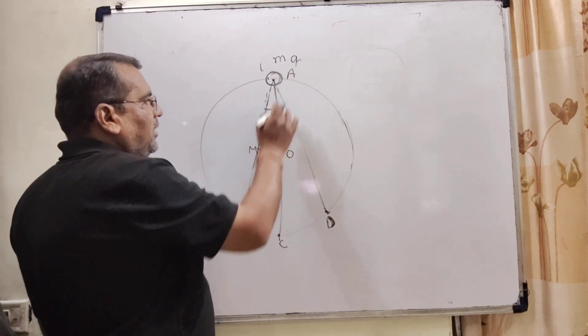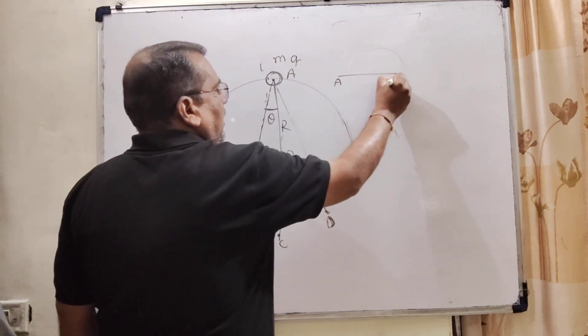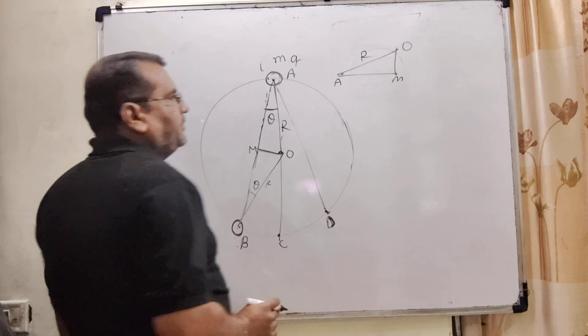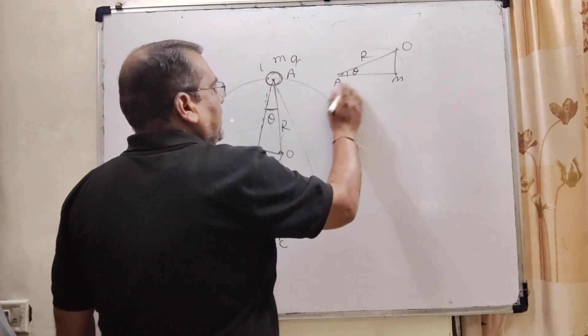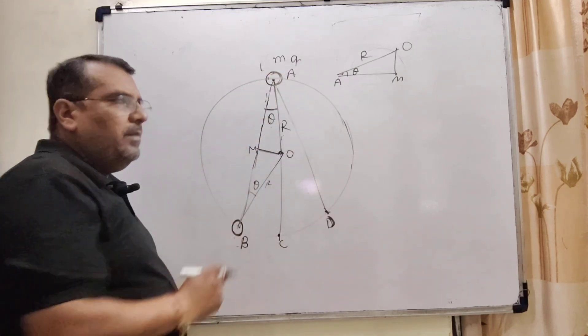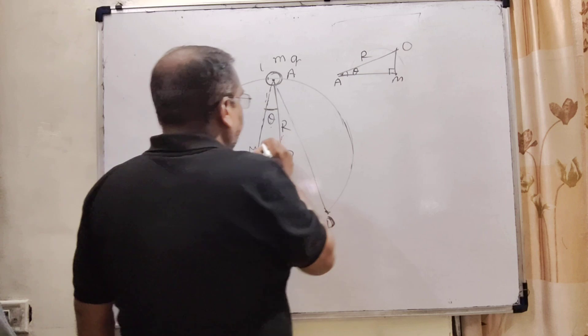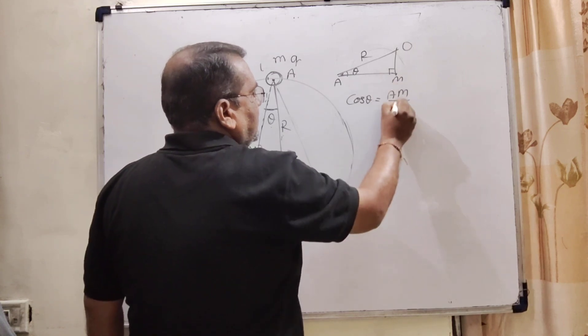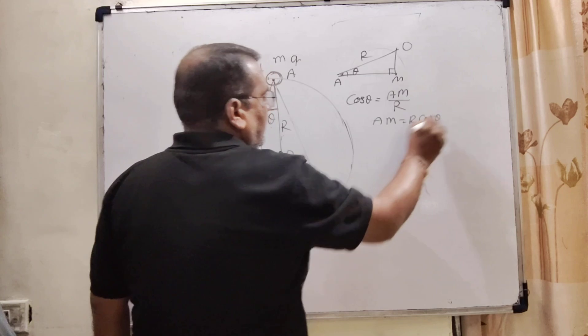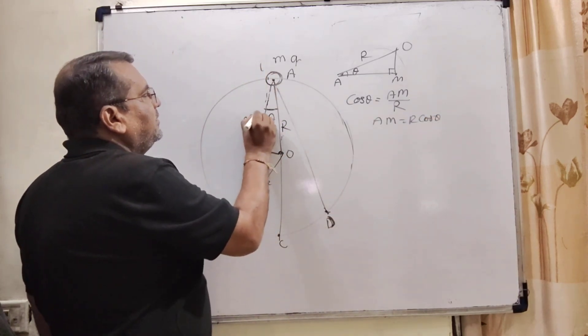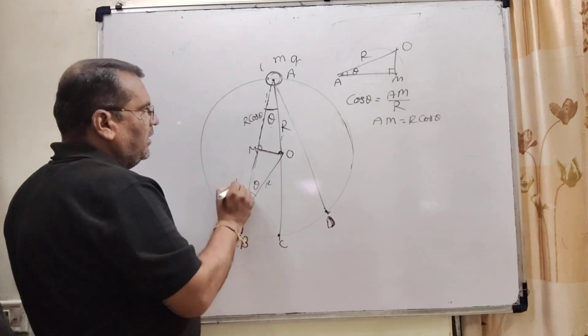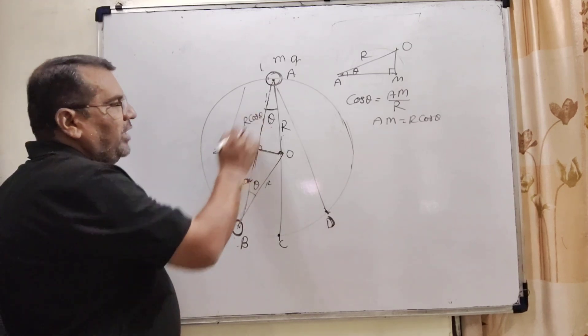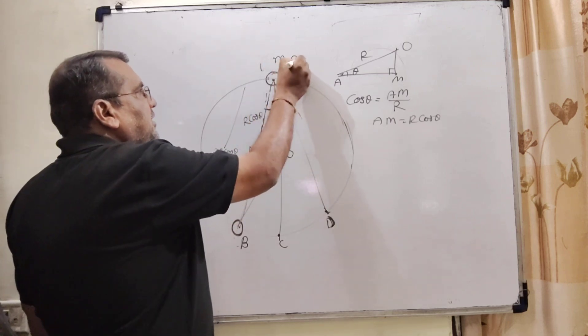This point, consider O. Using the triangle AMO, where AO is the radius and this is theta. Let us first calculate AM. It means base, because this is 90 degrees. So cos θ = base / hypotenuse = AM / R. So AM = R cos θ. Here we get R cos θ. This distance is also equal, so this is also R cos θ. The whole distance becomes 2R cos θ. So here we get the distance. And this is the equal charge, Q and Q.